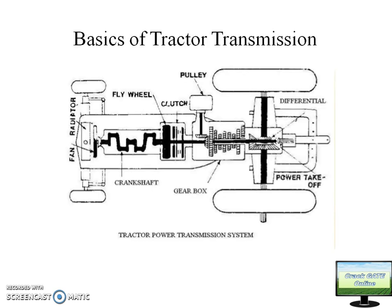Let's start. This is a simple layout of a tractor. Here you can see the engine, the crankshaft, and the radiator used to cool the engine. This is the clutch section. The engine produces power and delivers it to the clutch.